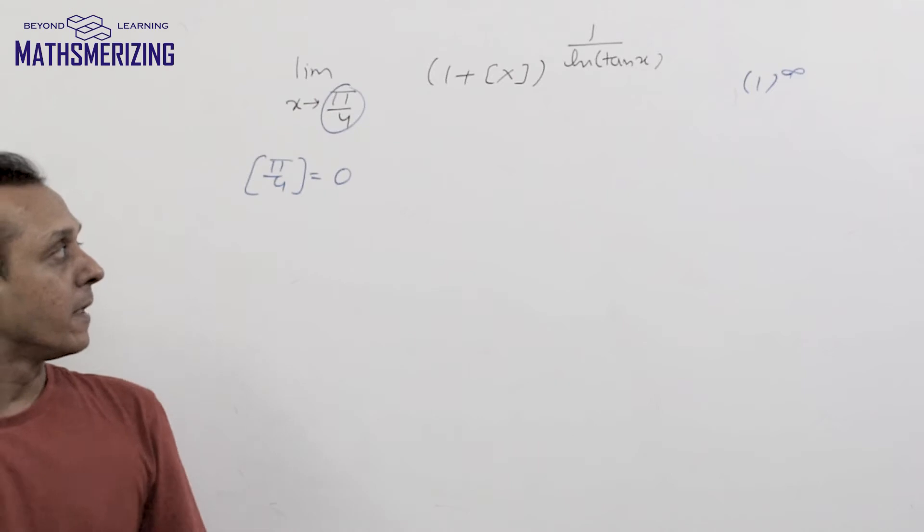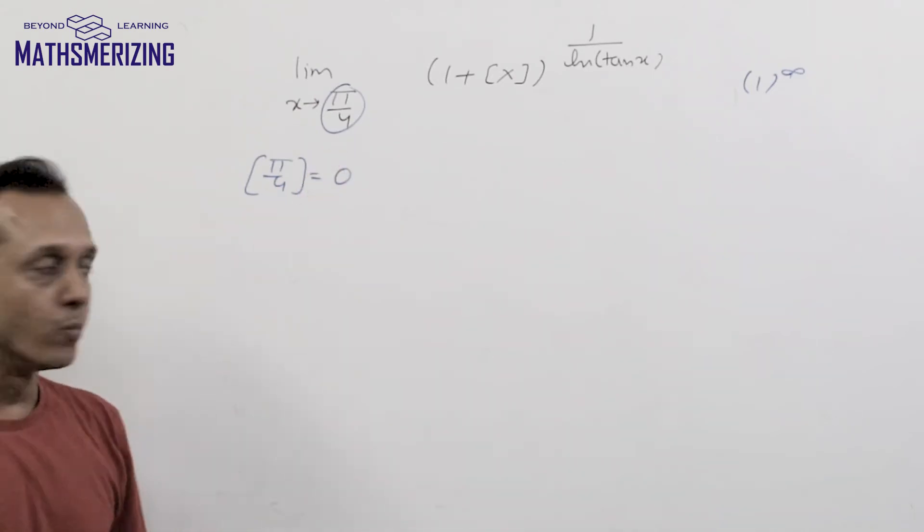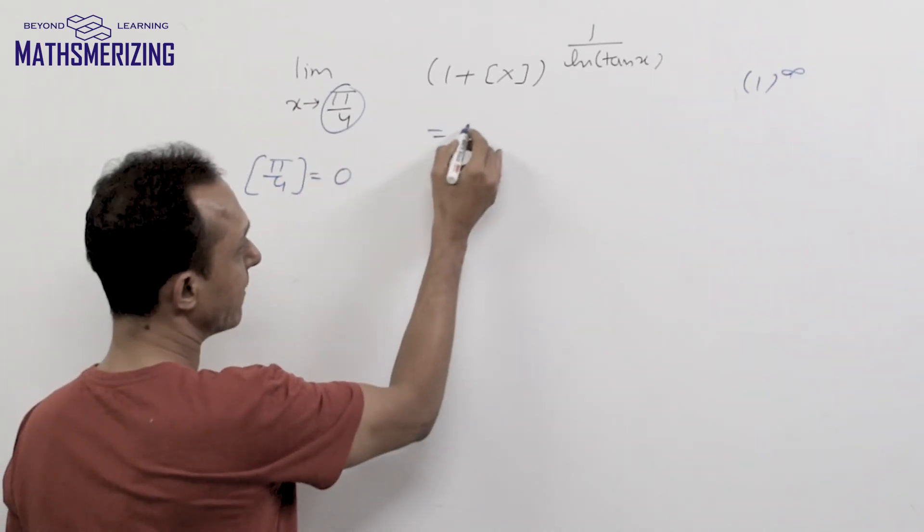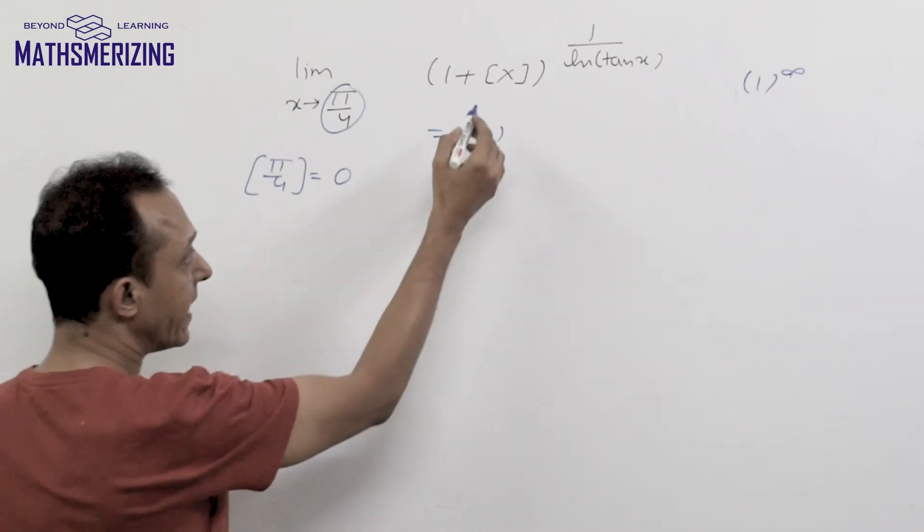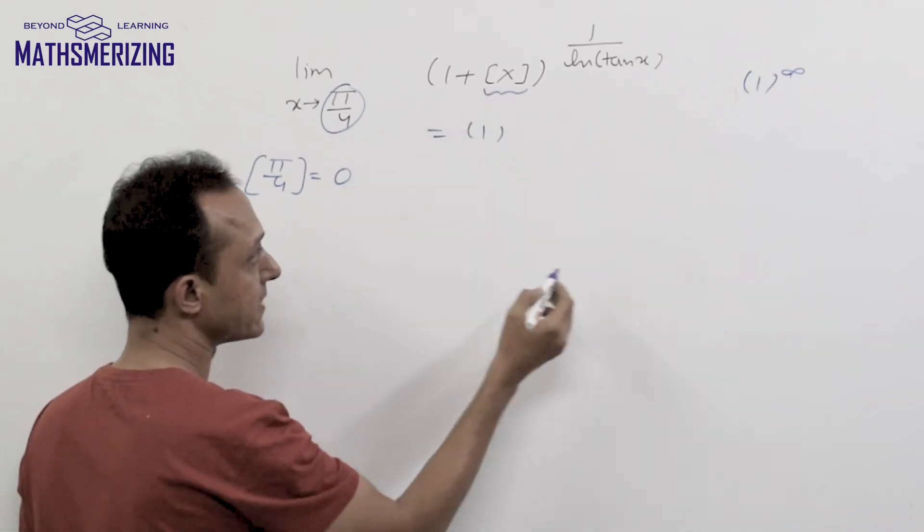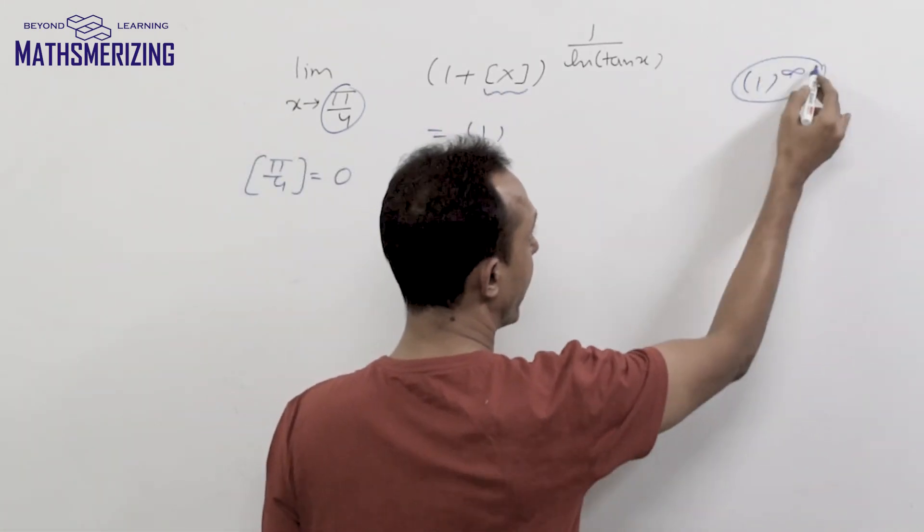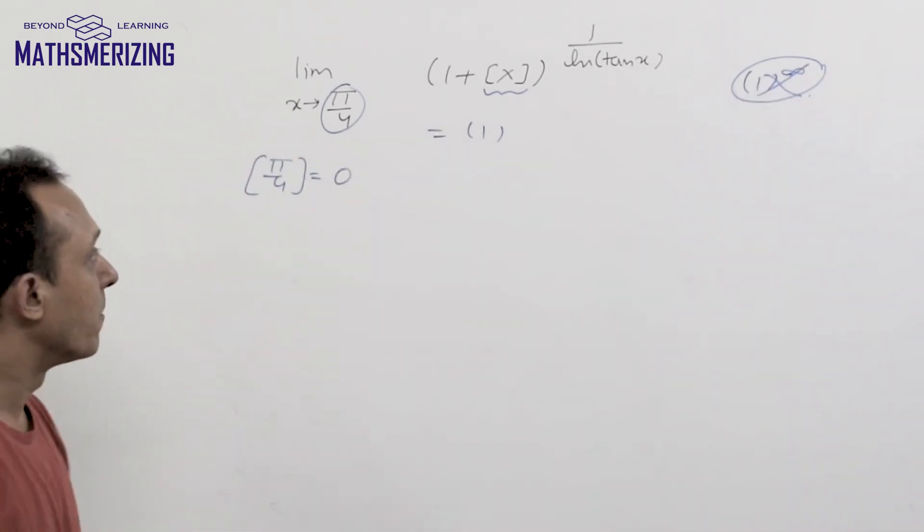Now how do I solve this one? So what I will say is the answer to this question is simply 1 without having to solve anything. Now because I have greatest integer function of x here, then I cannot write it as 1 to the power infinite form.